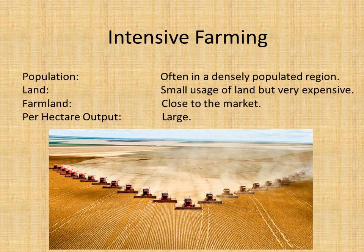In terms of farming, intensive farming is often found in more densely populated regions because farms are located just outside of small towns and cities. Land is small but very expensive for that same reason, and being closer to the market allows them to distribute a lot easier.